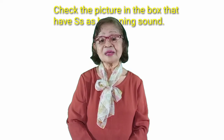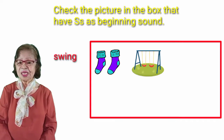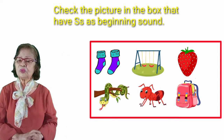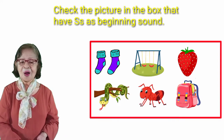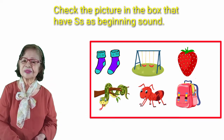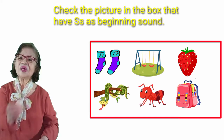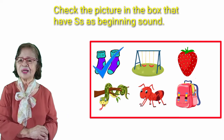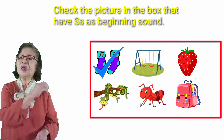Let's check the pictures in the box that have S as beginning sound. The pictures in the box are socks, swing, strawberry, snake, ant, and bag. What are we going to check? The pictures that have S as beginning sound. Socks starts with letter S, so we're going to check it. It's a swing — swing starts with S, so we're going to check swing. Strawberry starts with letter S, so we're going to check it.